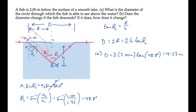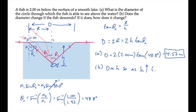Part B asks what happens to the diameter if the fish descends. Notice that the diameter d is proportional to the fish's depth h, so as the fish descends and h increases, the diameter of the circle increases in proportion.